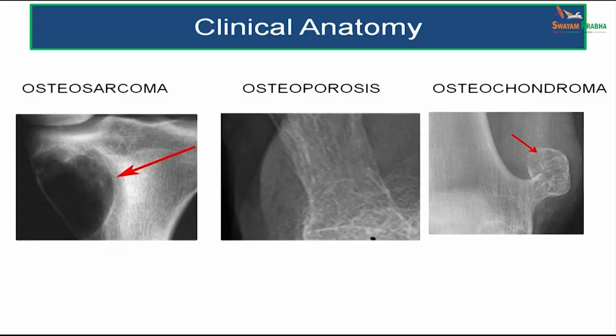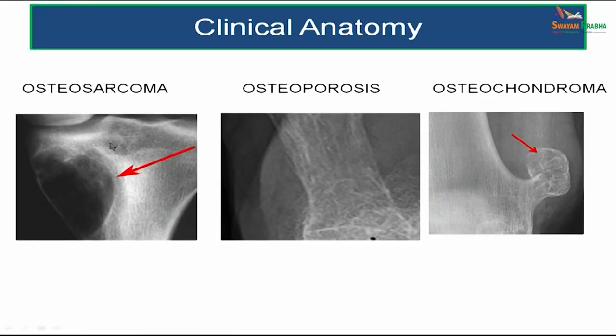Histology means microscopic structure of bone. Understanding the histology of bone will enable us to understand the clinical basis of conditions like osteosarcoma, osteoporosis, osteochondroma, and other such conditions which affect patients.